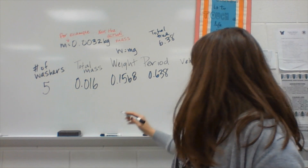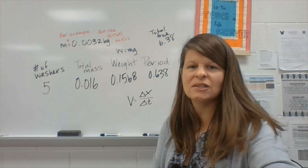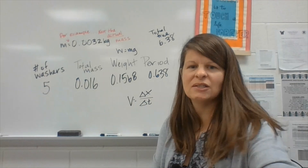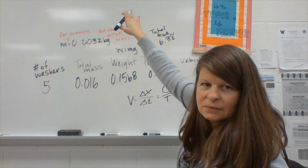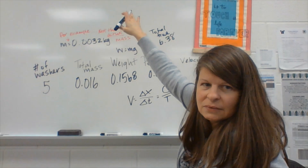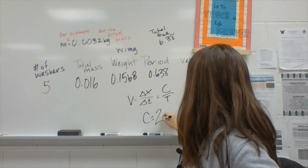The next thing is going to be velocity. Velocity, going back to kinematics, is defined as the change in position over the change in time. The change in position around a circle is the circumference. The total time to travel once around the circle is the period. You're going to find the circumference up above — you should have already calculated it based on your radius, because circumference equals 2πr. And then period is coming from right here.